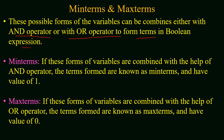We have two possible types of terms in a boolean function: min terms and max terms. If all the forms of variables are combined with the AND operator, these terms are known as min terms, and min terms have a value of 1. If all the forms of variables are combined with the OR operator, the corresponding terms are known as max terms, where max terms have a value of 0.